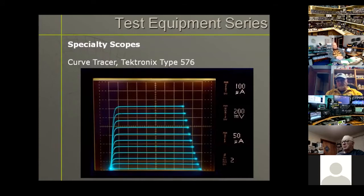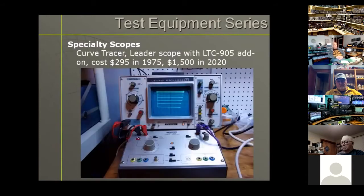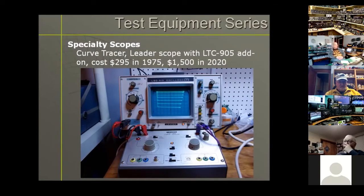What you see here is a display on the 576 of a family of curves for a transistor. The nice thing about the curve tracer is that it tests the transistor under real operating conditions, not just low voltage like an analog meter would. Back in the days of home electronics service shops, they couldn't afford the $20,000 Tektronix curve tracer, but they could afford about $295 — roughly $1,500 today — for an add-on. This is a Leader scope with a Leader curve tracer: hook it up to the horizontal and vertical inputs of the scope and display the curves.